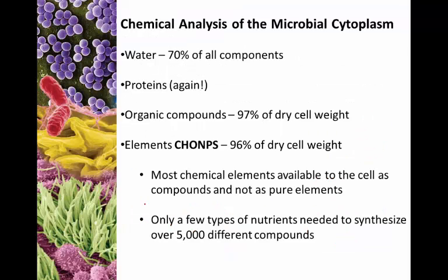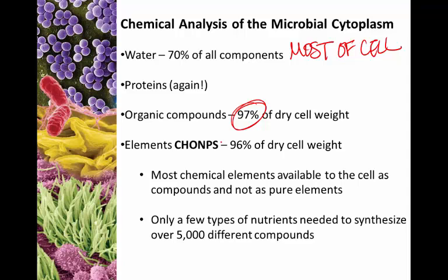If we look at the components of a cell, the vast majority is water — the most common molecule within a cell. Organic compounds make up 97% of the dry weight of the cell. In other words, when we take away the water, 97% of what remains is organic compounds. Of that, 96% is made up of the elements carbon, hydrogen, oxygen, nitrogen, phosphorus, and sulfur. These are the main constituents of most macromolecules and chemical components of cells.